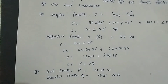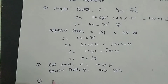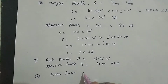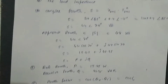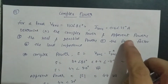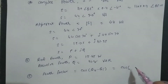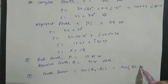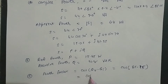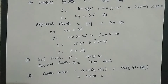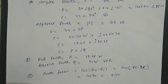Next पूछा गया power factor। Power factor = cos(angle of voltage − angle of current)। Voltage का angle है 85°, current का angle है 15°। तो power factor = cos(85° − 15°) = cos70° = 0.34।